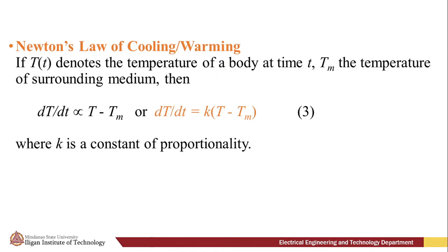Next, we also have Newton's law of cooling and warming. To model Newton's law of cooling and warming, we denote T(t) as the temperature of a body at time t and T_m is the temperature of the surrounding medium. Then we have this proportionality: the change in temperature with respect to time t is directly proportional to the difference of the temperature of the body and the surrounding temperature. So k here is a constant of proportionality.